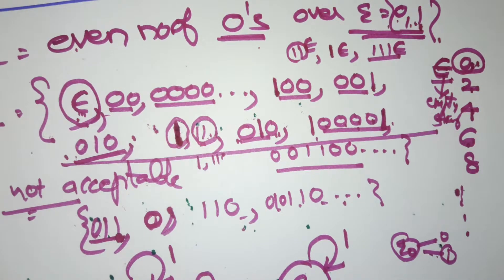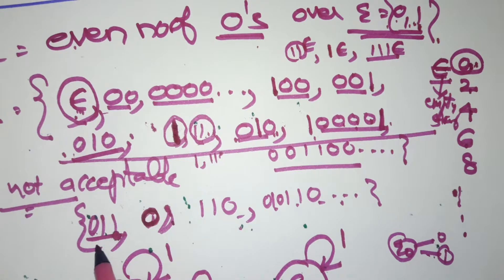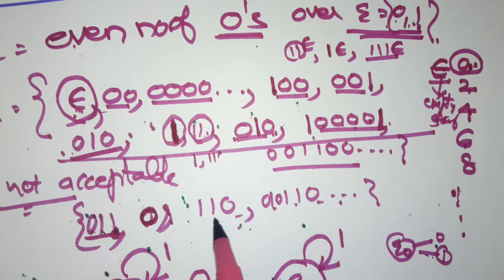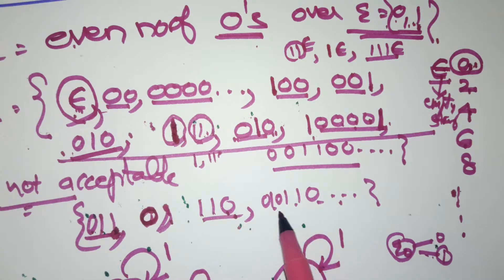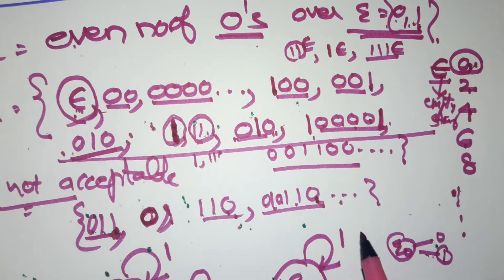Next, it is better to write the not acceptable strings also. Only one zero appearing is not acceptable. '011' is not acceptable because there is only one zero. Any combination of zeros and ones with an odd number of zeros is not acceptable, and so on.